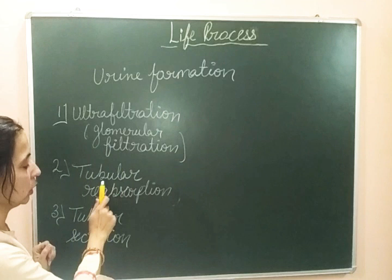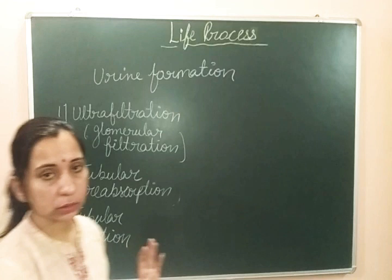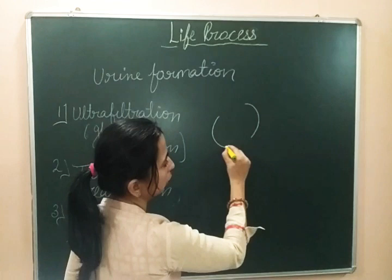The third step is tubular secretion. So these are the three processes by which the kidneys form urine: first, ultrafiltration (also known as glomerular filtration); second, tubular reabsorption; and third, tubular secretion. We have already discussed the structure of the nephron.